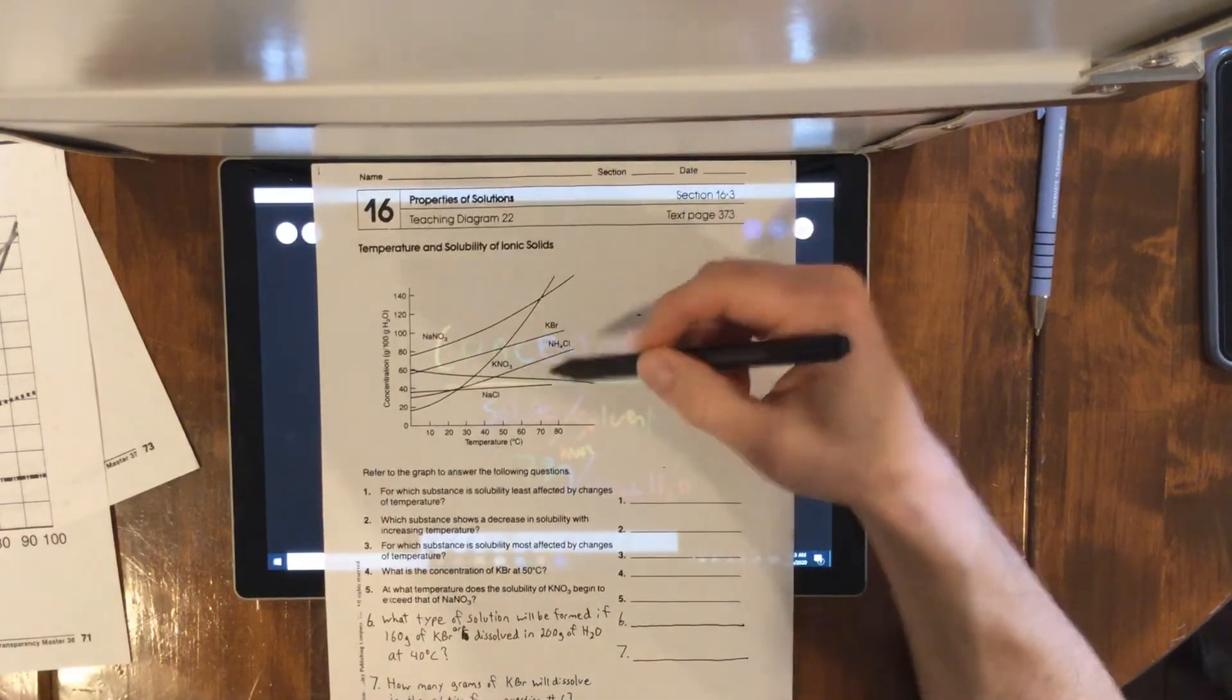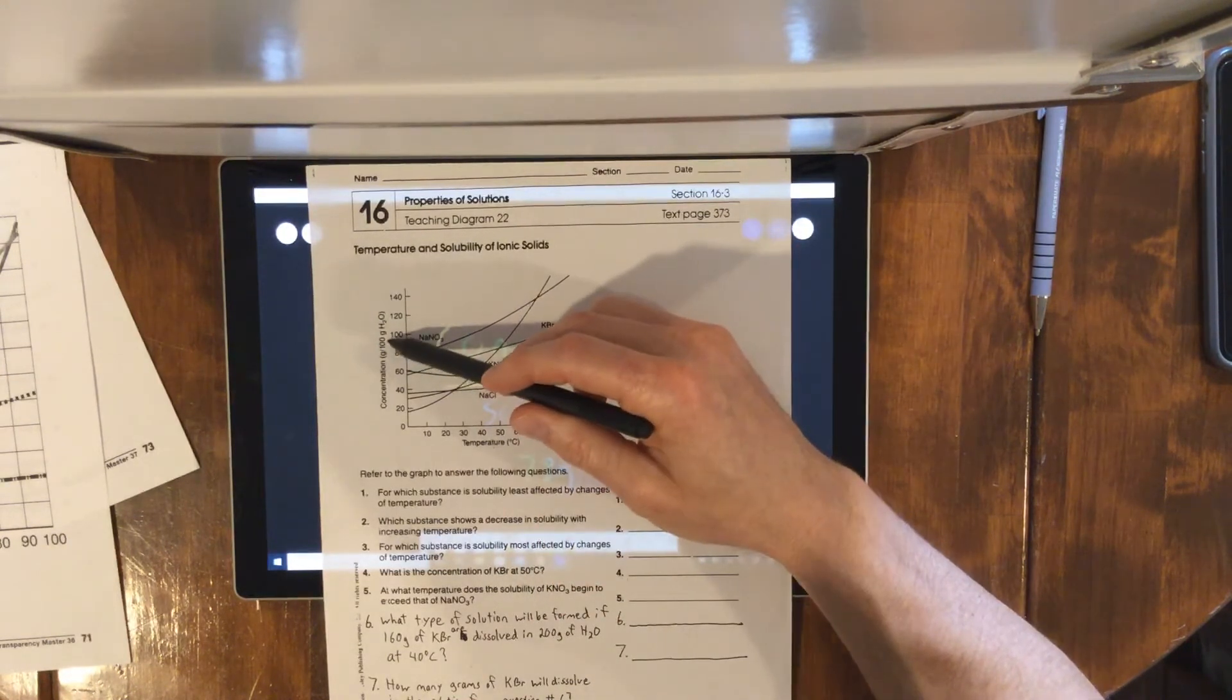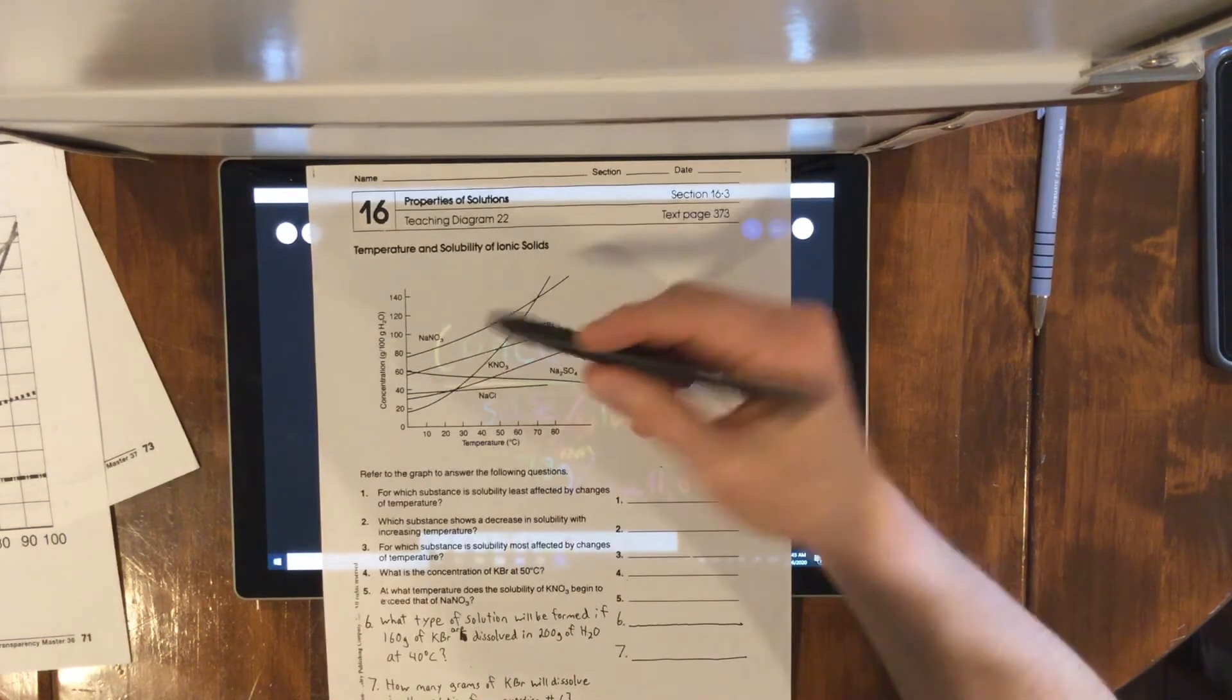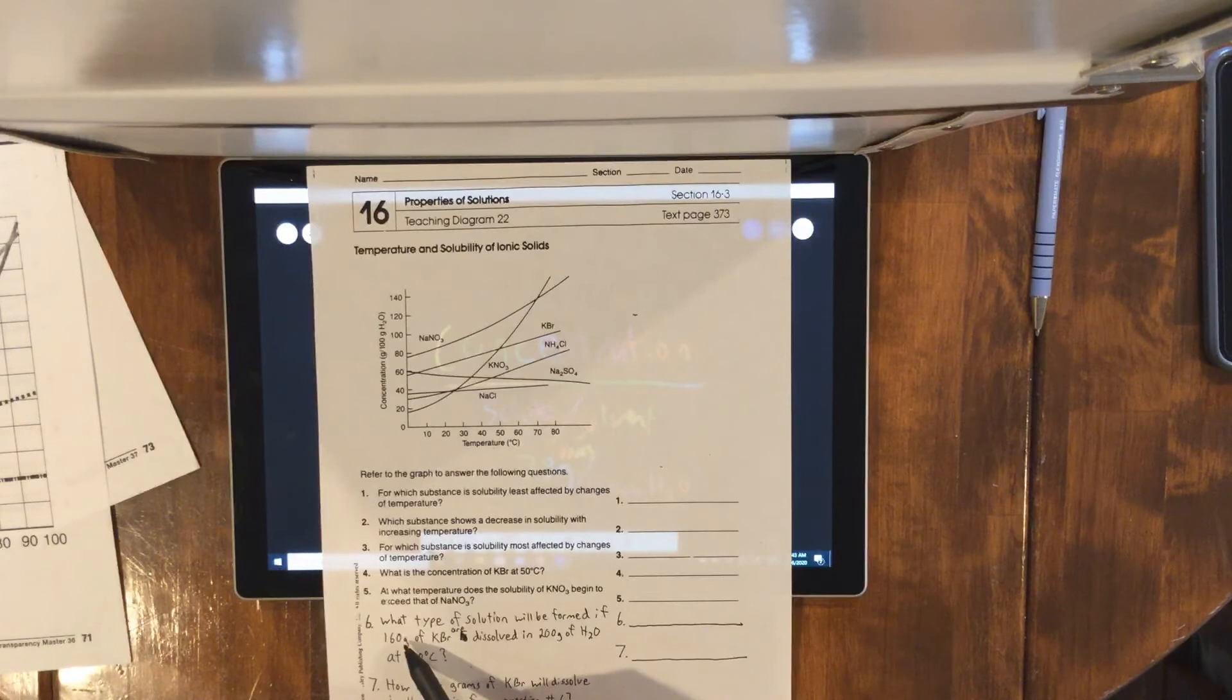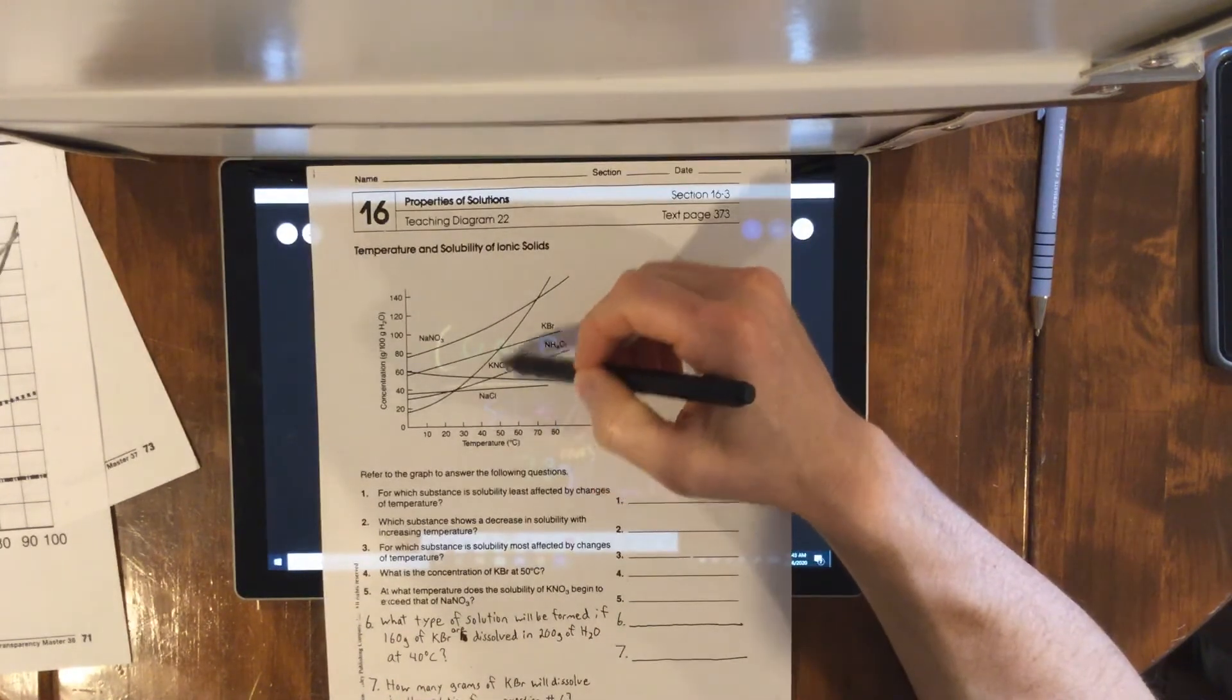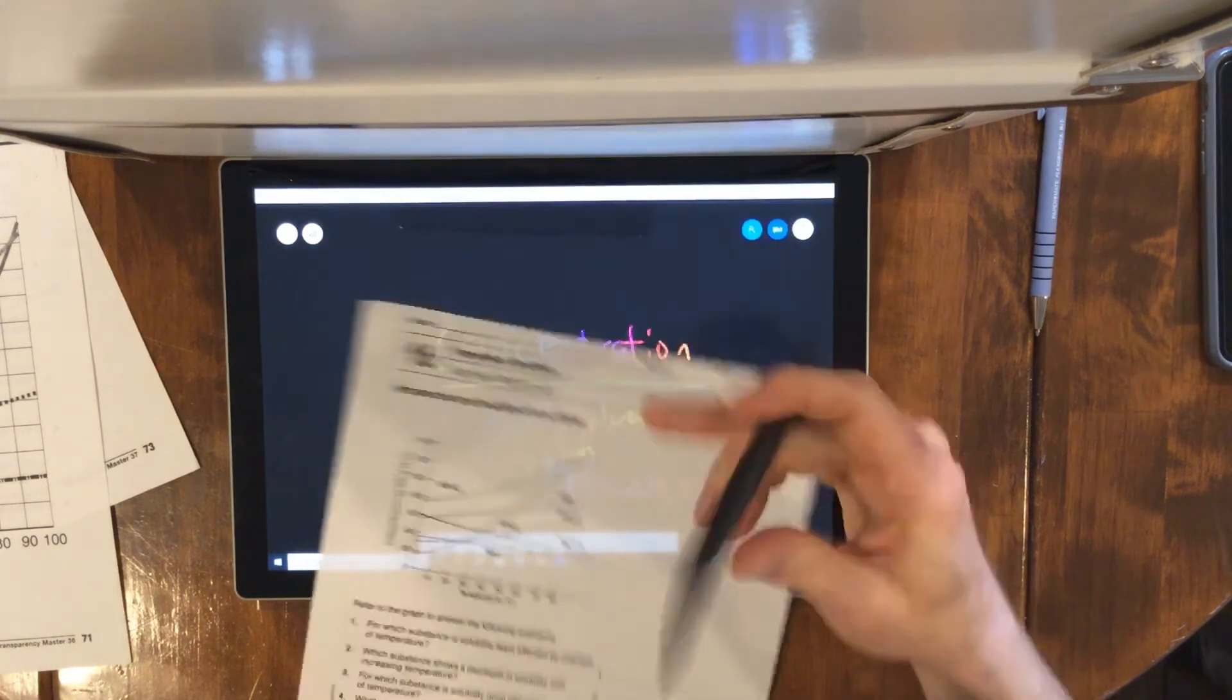Let's say at 40 degrees we can dissolve 78 grams in 100 milliliters. If we double the 100 to 200, then we'd have to double the 78. 78 plus 78 is 156. So 156 would be the maximum. What type of solution would be formed? It would be supersaturated, right?